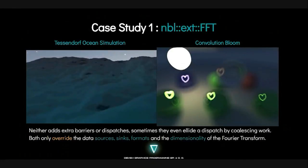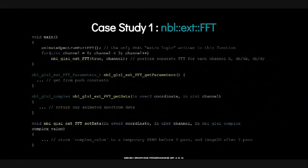Here's a case study. We have an extension which implements the fast Fourier transform — not a huge global one, but something that fits within a workgroup. There are two examples that make use of this, including another extension called convolution bloom. Both the ocean simulation and convolution bloom make use of this extension, and they both combine the work into as few dispatches as possible. This is the amount of code our developer had to write to perform the FFT for just the first of the two dispatches necessary for the ocean height map simulation in the compute shader. The FFT bloom is very similar. The only thing he's overriding is get parameters, data, set data, and obviously there's the animation of the frequency spectrum, which is a custom thing for this particular purpose.